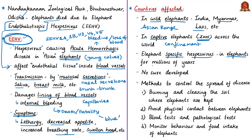Research studies say this elephant-specific herpes virus may have been in elephant populations for tens of millions of years. Human herpes viruses have also been in human populations for a long period. Therefore it is considered a naturally occurring disease, and every elephant — in the wild or in captivity — may be carrying one or more strains of elephant herpes virus.